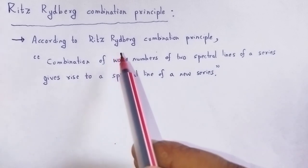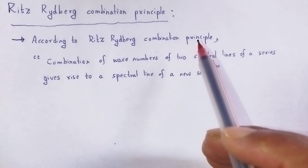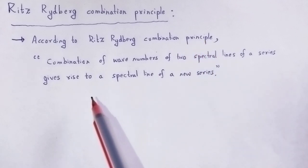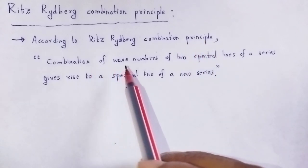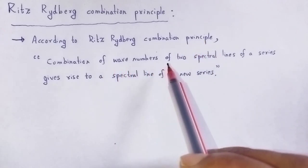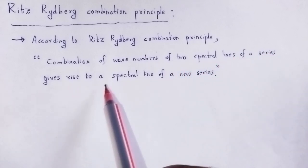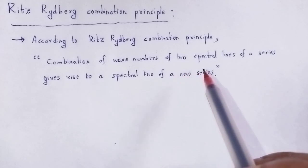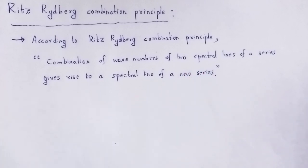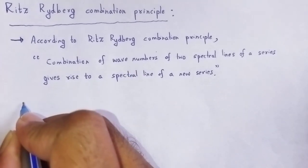According to Ritz's Combination Principle, the combination of wave numbers of two spectral lines of a series gives rise to a spectral line of a new series. This can be easily understood by taking an example of spectral series in the case of the hydrogen atom.